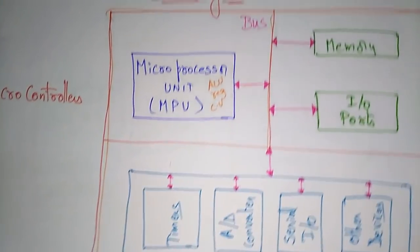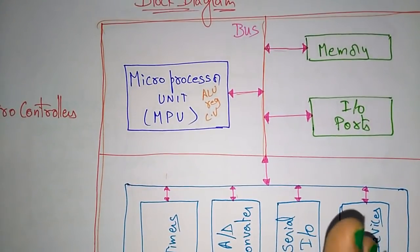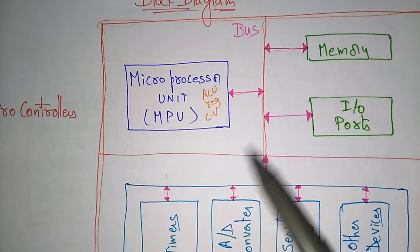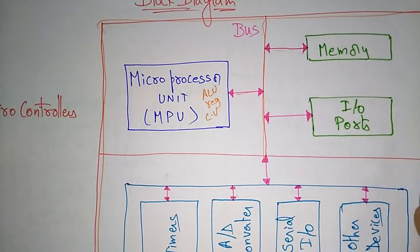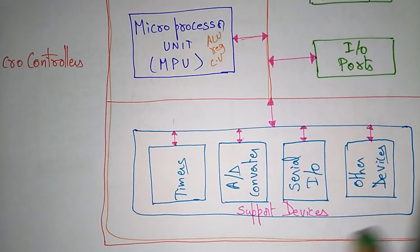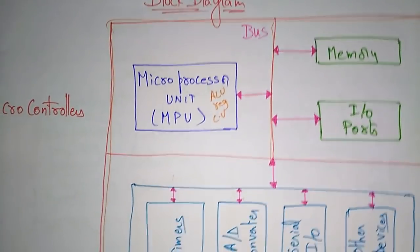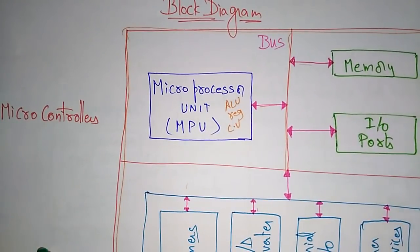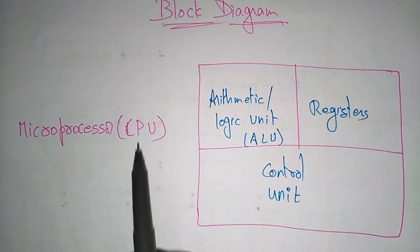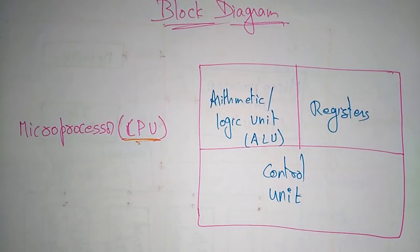This is the microcontroller block diagram. Whenever you describe what a microcontroller is: a microcontroller consists of three main components integrated in a single chip along with some supporting devices. The three main components are the microprocessor unit, memory, and input/output ports, along with supporting devices like timers, analog-to-digital converters, serial I/O, and other devices communicated through a bus. That is about the microcontroller.